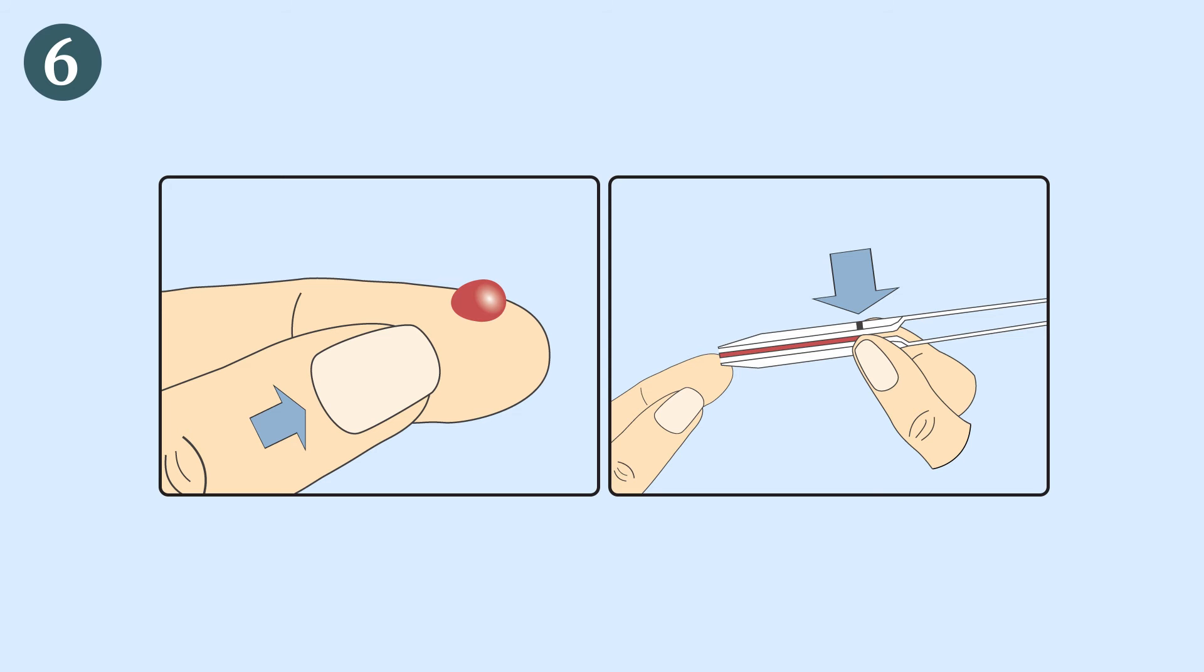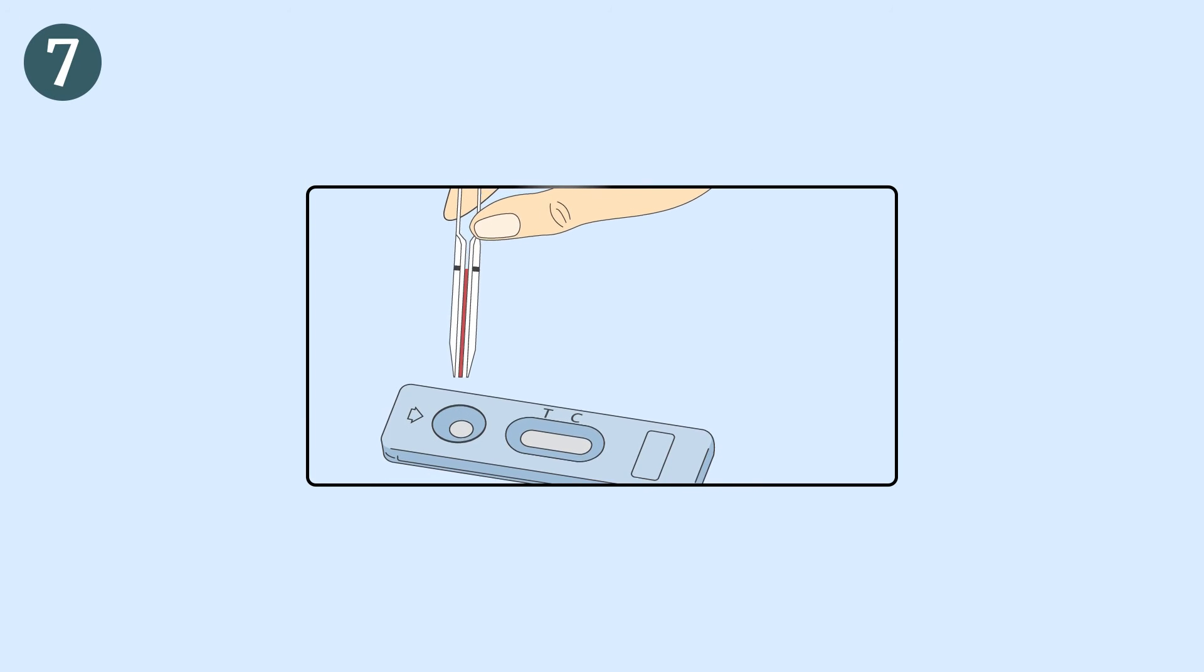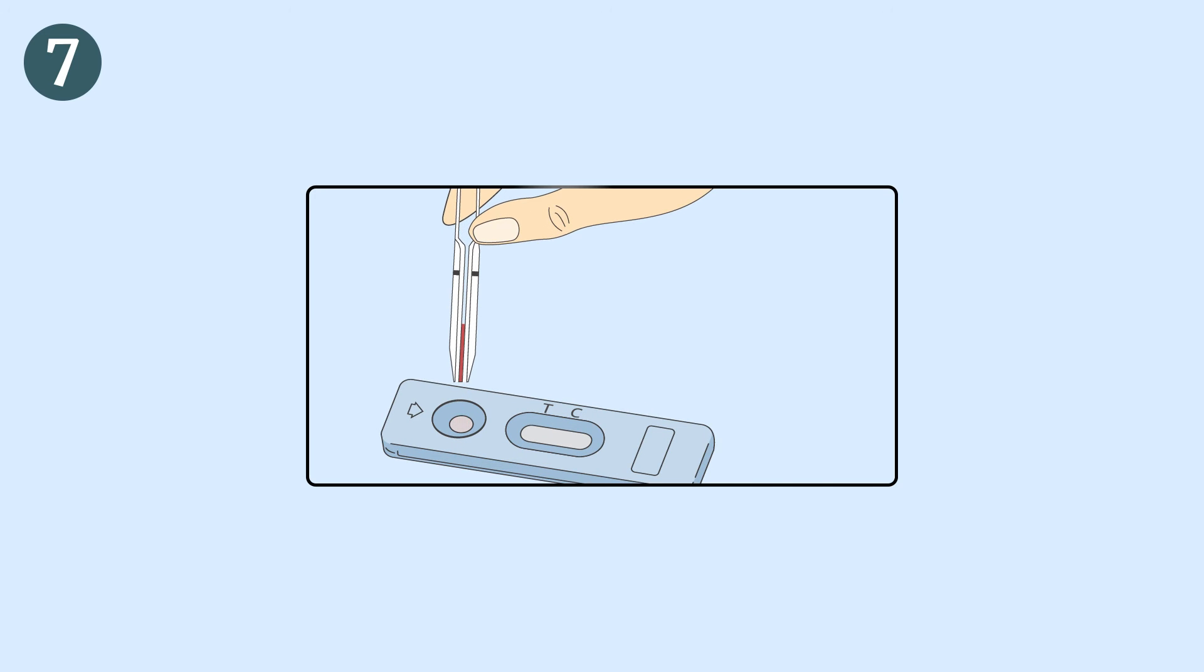As far as possible, avoid air bubbles. Put the blood collected with the pipette into the sample well of the device by pressing on the pipette bulb. Wait 30 to 40 seconds for the blood to be totally absorbed into the sample well.